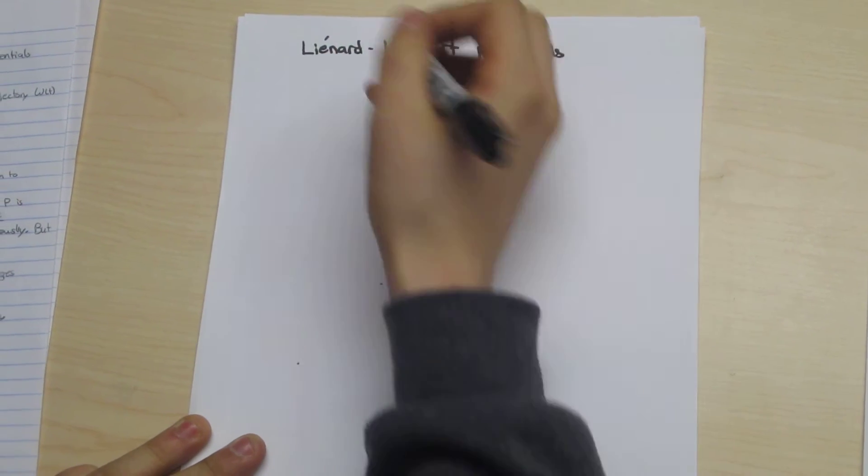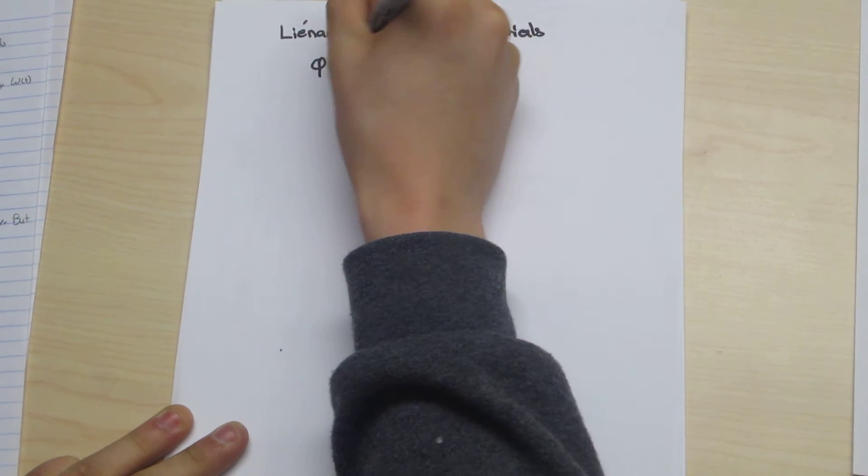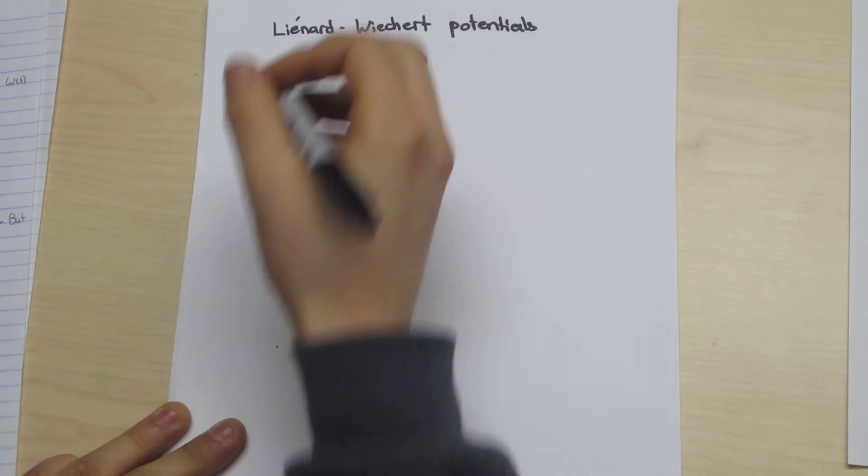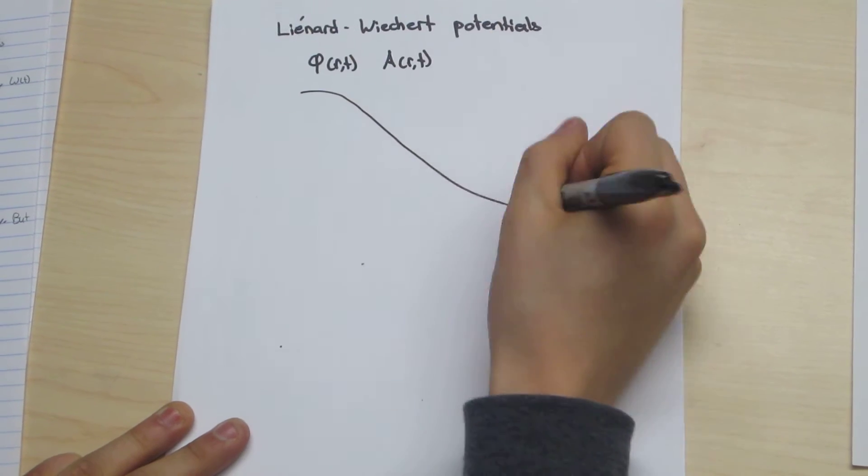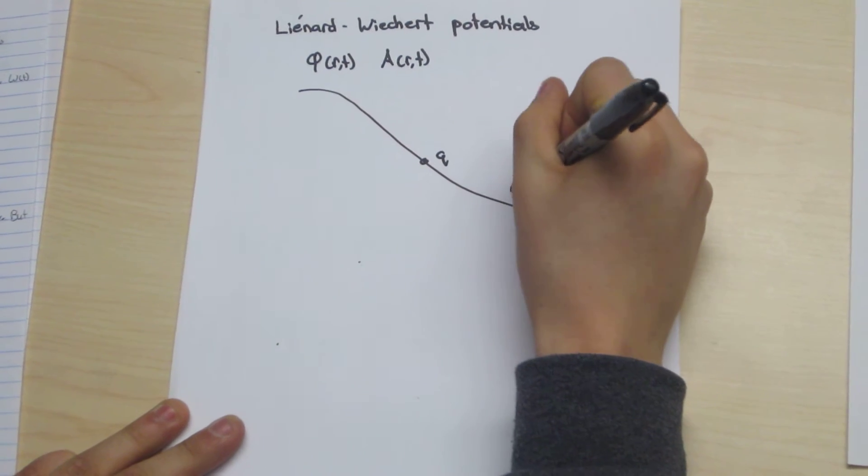For point charge q moving along the specified trajectory omega t, we will use an arbitrary point p-naught.